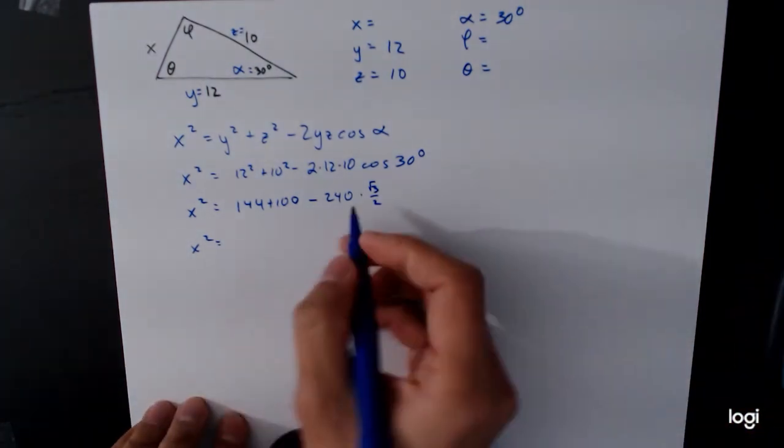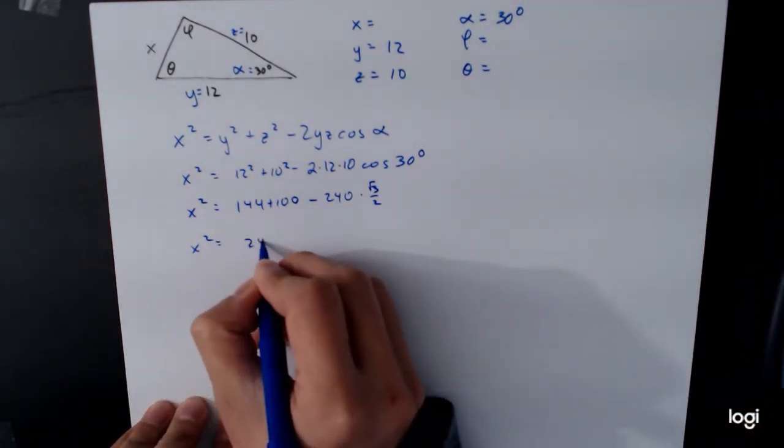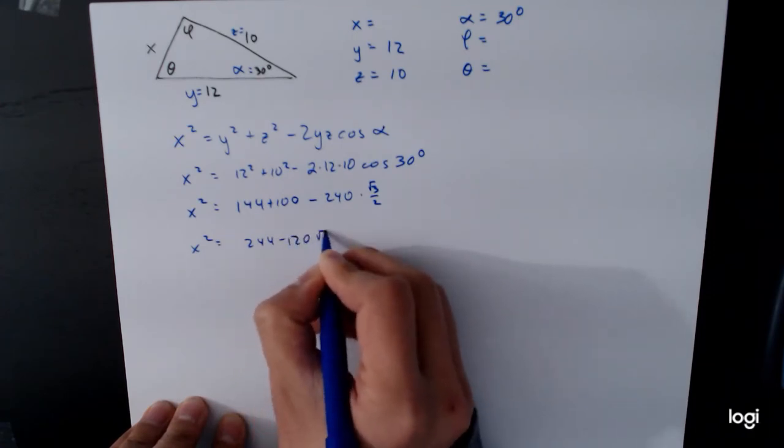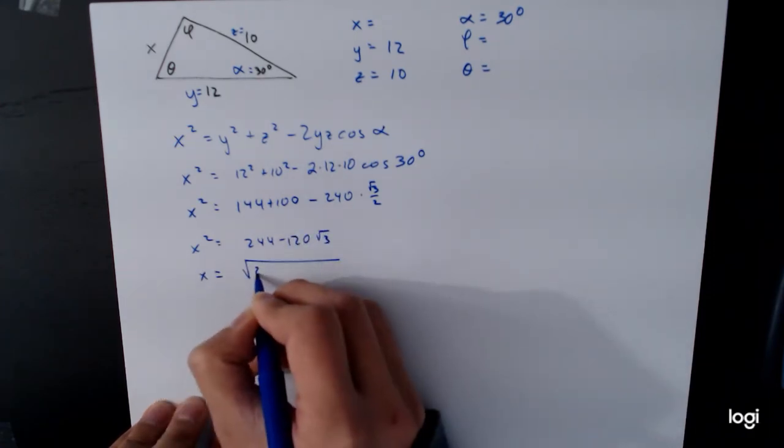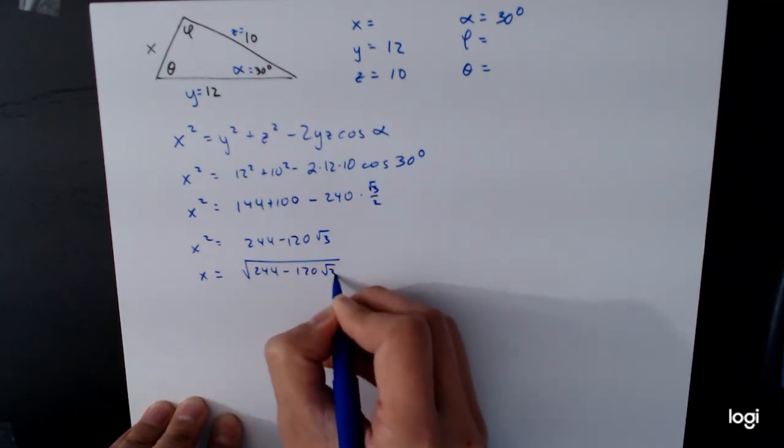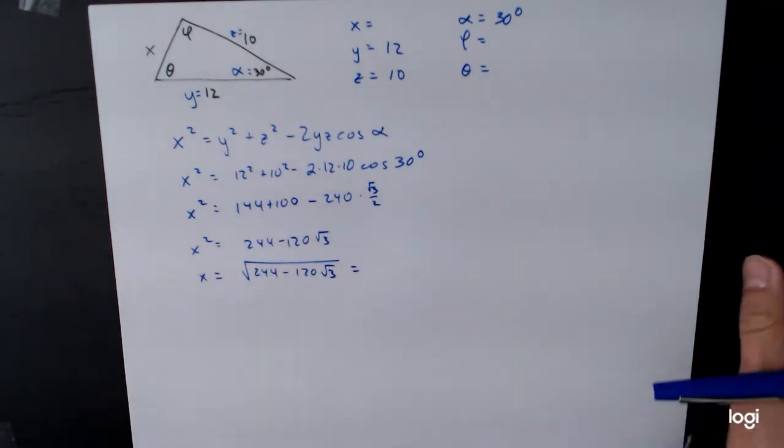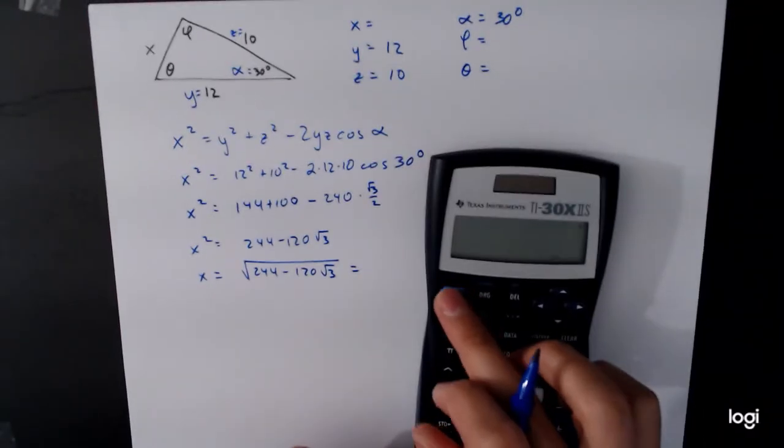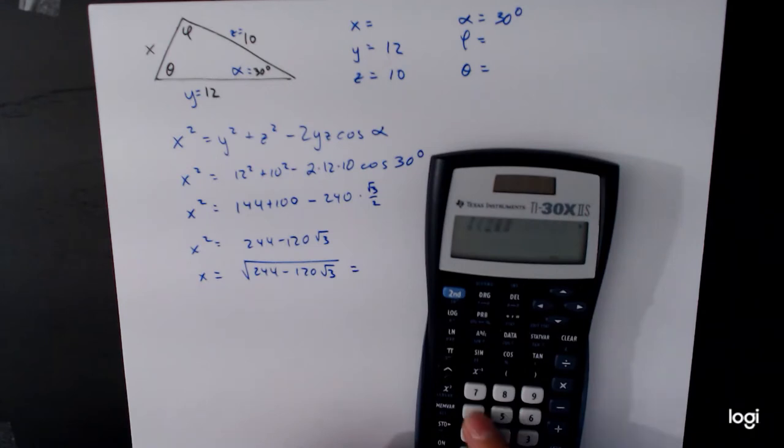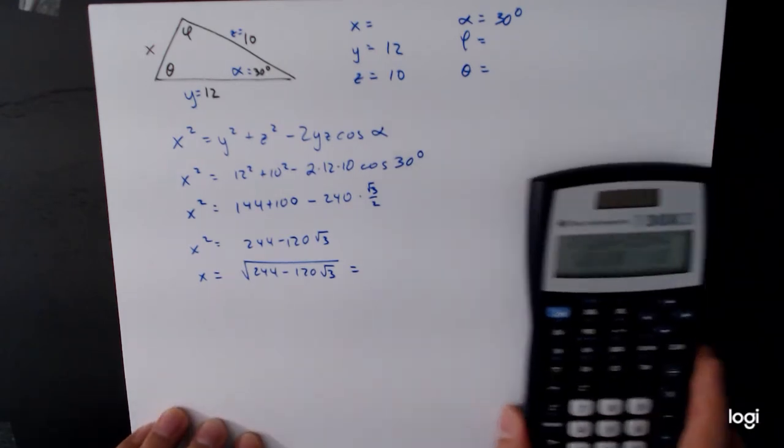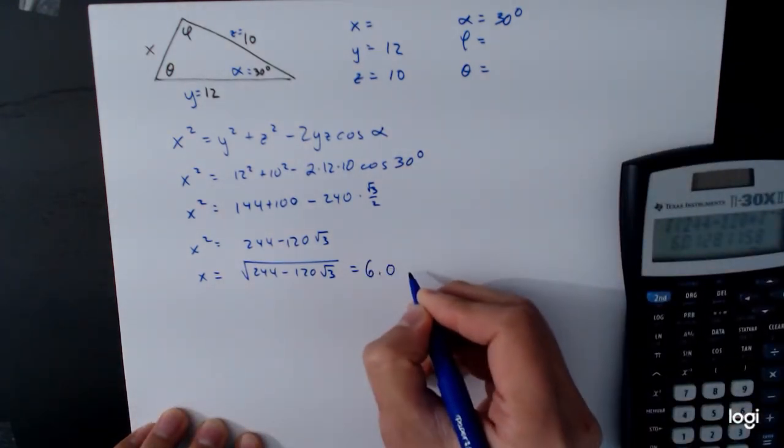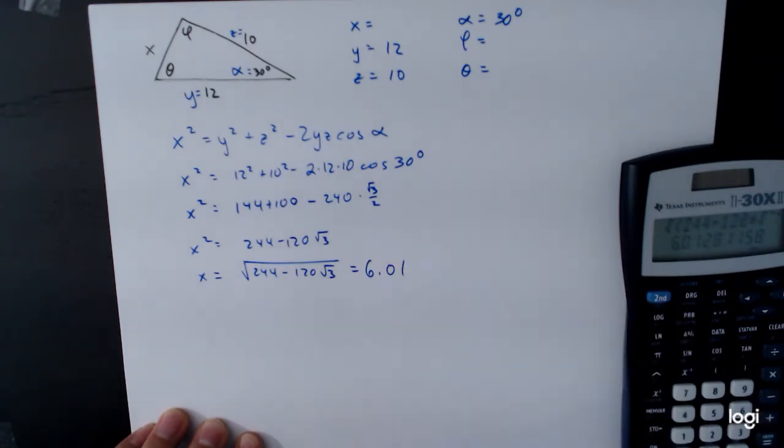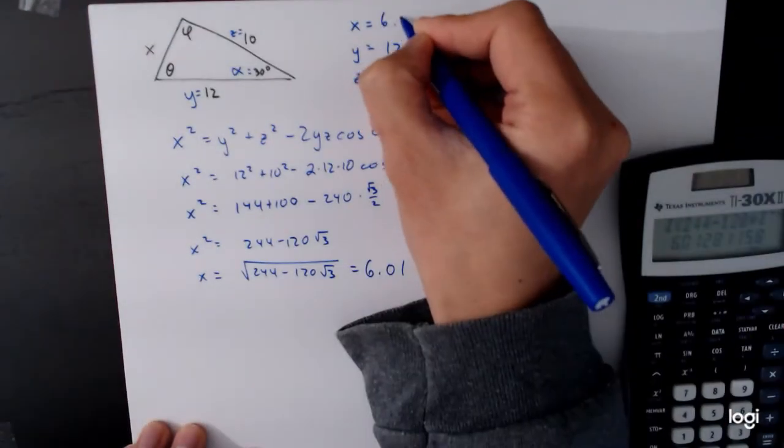And at this point, we can go ahead and simplify. We've got 244 minus 120 times the square root of 3. So x is equal to the square root of 244 minus 120 square root of 3. And at this point, now it's appropriate for us to use a calculator to get a decimal approximation. Again, the general rule of thumb is you want to wait as long as possible before using a calculator to avoid rounding errors. So 244 minus 120 times the square root of 3, square root of that thing, which is about 6.01.